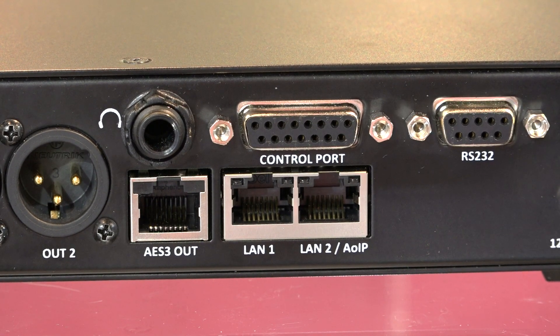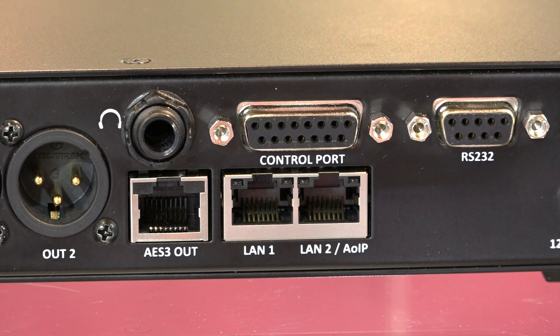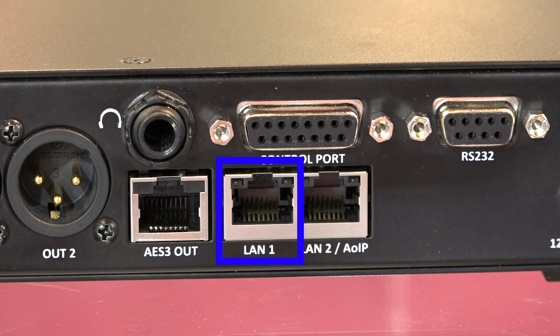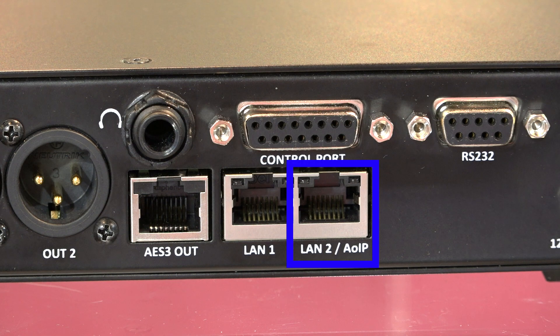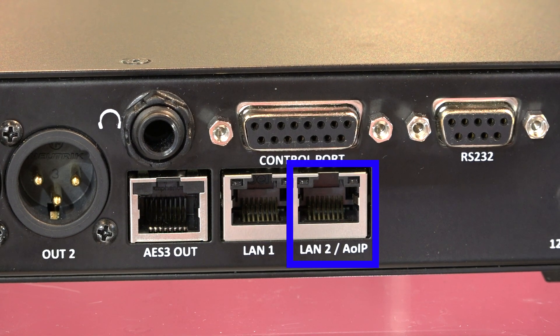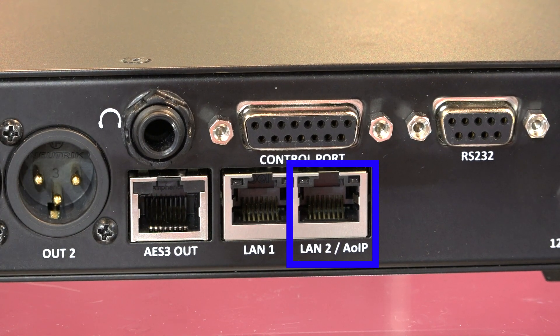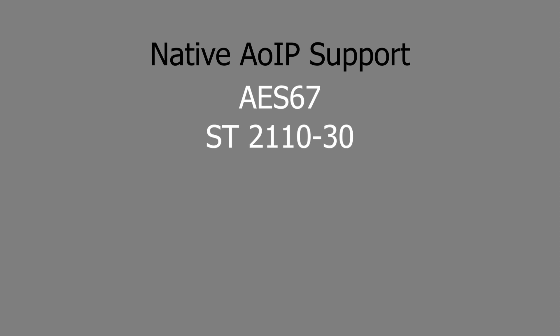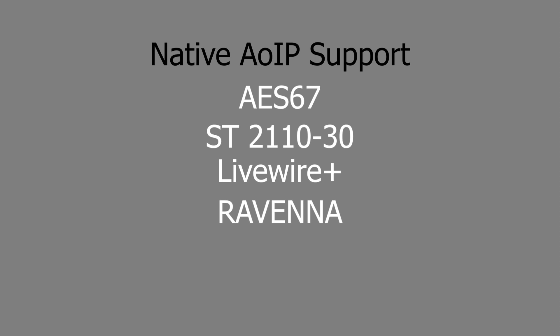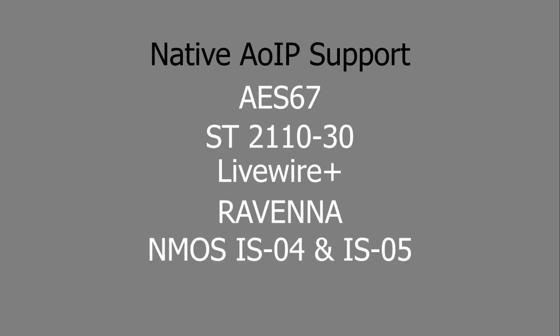We have two Ethernet ports. Ethernet port one is for streaming. Ethernet port two is optional, or switchable, for streaming — which works with our Smart Stream Plus redundant streaming — or for AOIP support, as the box natively supports AES67, ST2110-30, Livewire Plus, Ravenna, NMOS 4 and 5, and Ember Plus.